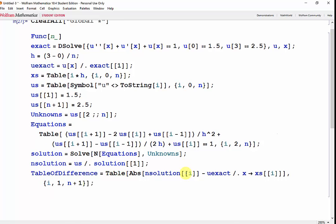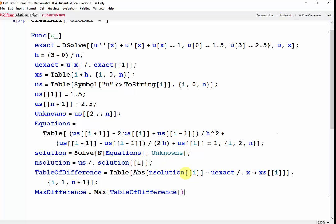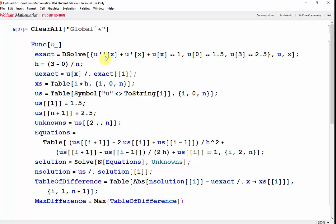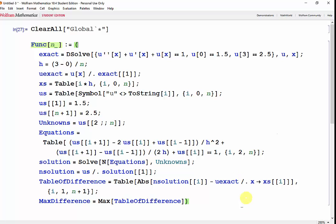We can use the Max function to find the maximum absolute error. We'll call this maxdifference, which is the Max of the table of difference. Let's wrap our entire function inside round brackets and shift-enter.